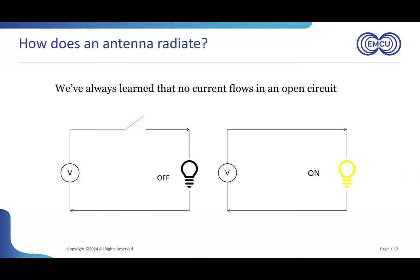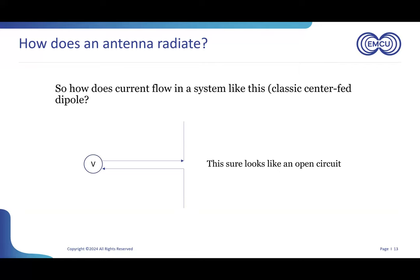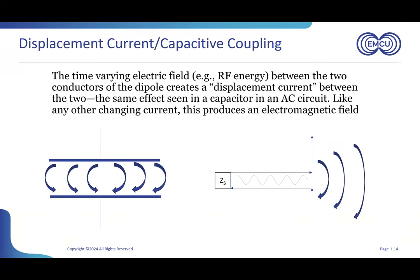When I first started teaching this topic, I started to explain antennas and then realized there was a fundamental level where I did not understand how antennas worked. It really goes against intuition — because we've always learned that no current flows in an open circuit. When the switch is off, there's a break in the circuit, no current flowing; you close the switch, create the conducted path, and power flows to your light bulb. So how does current flow in a system like a classic center-fed dipole? There's no conductive path between the two arms of the dipole — there's a voltage source between them but no conducted path. It really looks like an open circuit.